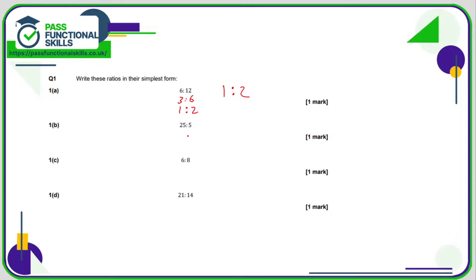25 to 5: both numbers are in the 5 times table. 25 divided by 5 is 5, and 5 divided by 5 is 1, so that's 5 to 1. For 6 to 8, divide both by 2 to get 3 to 4. And 21 to 14 — divide both by 7 to get 3 to 2.